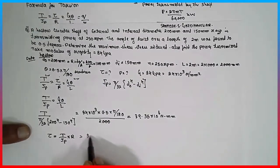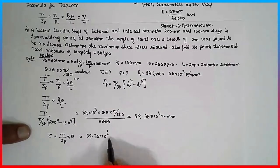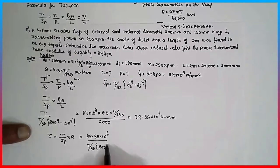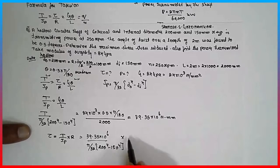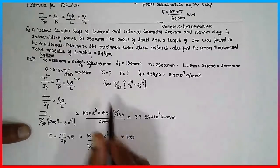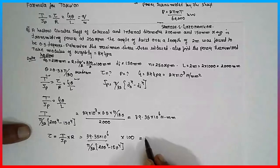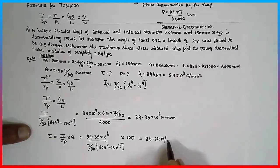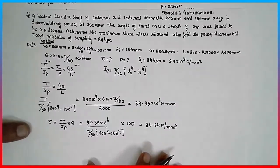Tau is equal to T divided by J into R. Substitute the value 39.35 into 10 raised to 6 divided by pi divided by 32, 200 raised to 4 minus 150 raised to 4, multiplied by 100. The answer is 36.64 Newton per mm square because it is a shear stress.